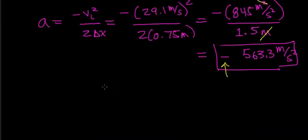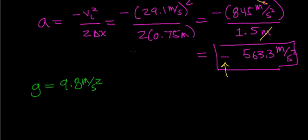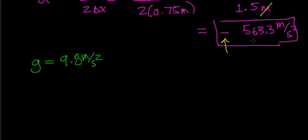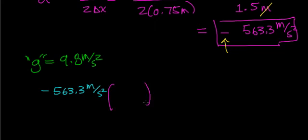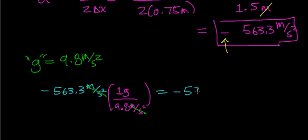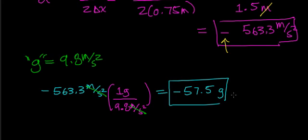The last part of this problem is to calculate the acceleration as a multiple of the gravitational acceleration. The gravitational acceleration is defined to be 9.8 meters per second squared. We convert negative 563.3 meters per second squared by dividing by 9.8 meters per second squared per g. The units of meters per second squared cancel out, and you get minus 57.5 g's. This gives you the acceleration in multiples of gravitational acceleration.